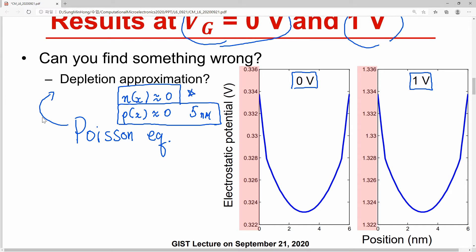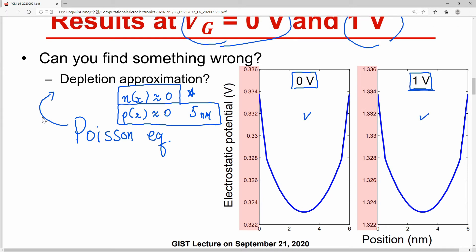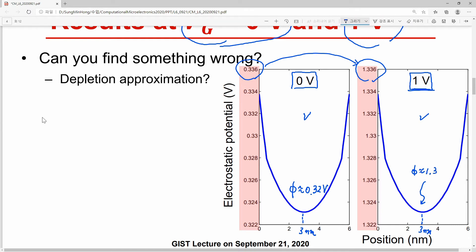Can we justify that there are no electrons at all in every case? This assumption cannot be justified for the 1 volt case. What is the difference between the left figure and the right figure? Only the potential has been increased, but that makes a really big difference. At the center point, 3 nanometers, we have potential around 0.32 volt. Also, in the 1 volt applied case, phi is close to 1.32 volt.